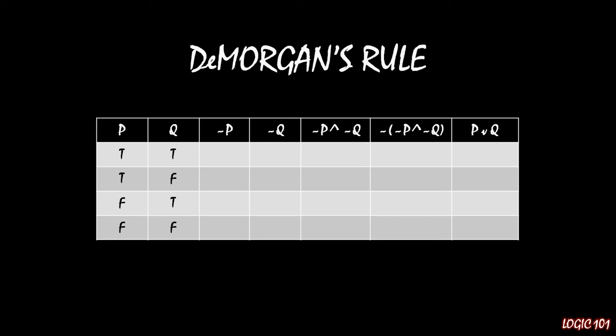For the first part we have not p and not q, so we flip the first column and the second column to create columns three and four. Then for column five, we have the conjunction of columns three and four — we look for where both are true. They are both true only in the fourth row, so not p and not q is true there; for every other row it's false.